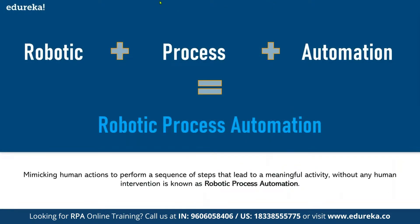So the meaning of RPA is: Robotic + Process + Automation. The technical definition is: mimicking human actions to perform a sequence of steps leading to a meaningful activity without any human intervention is known as RPA.